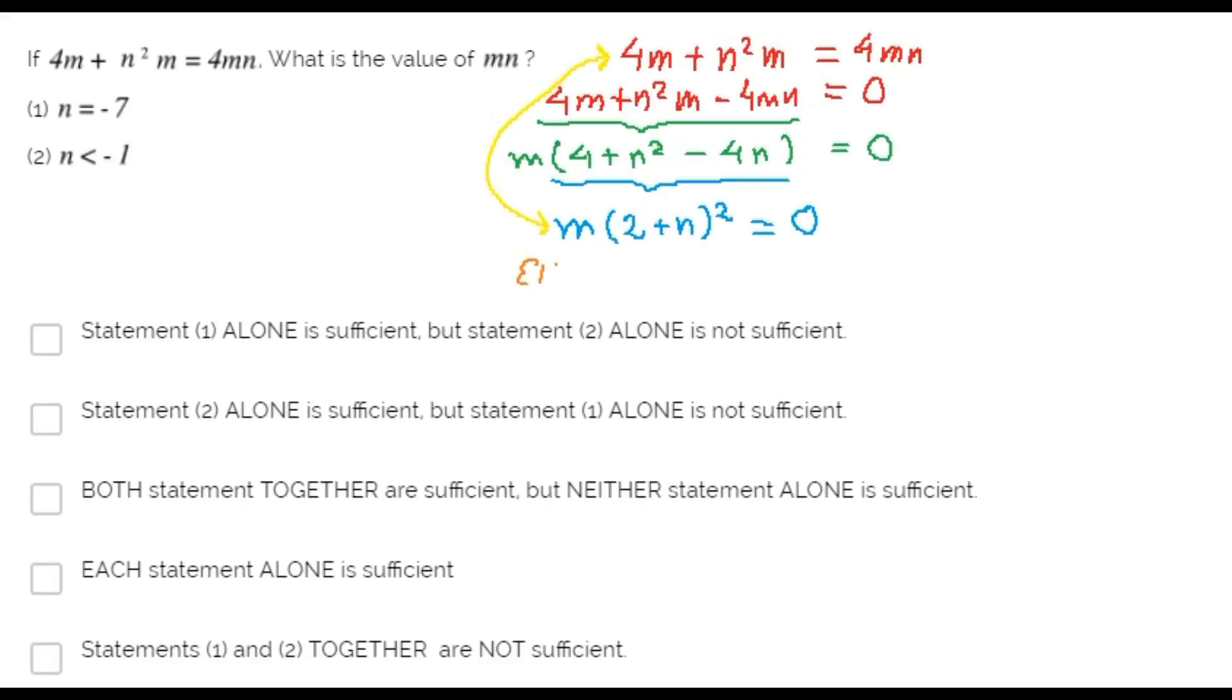We know that either m is zero or n is negative 2.